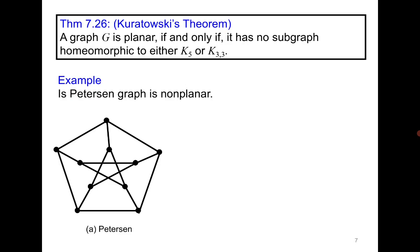What do you think — is the Petersen graph planar or non-planar? To show it is non-planar, you must find a subgraph homeomorphic to K3,3 or K5. Otherwise you must show it is planar, which can also be done by exhibiting a planar drawing. The idea is to look for a subgraph homeomorphic to K3,3 or K5.